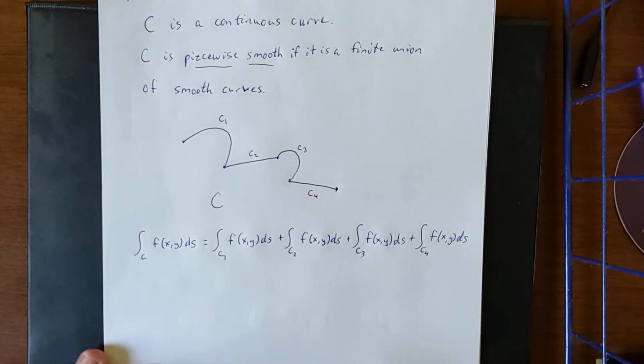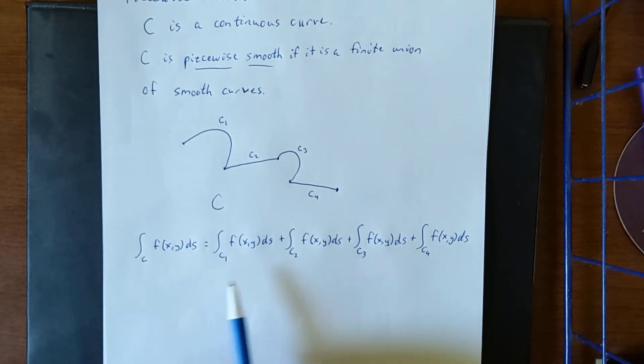So even if they all use different parameterizations, that's totally fine. We just give them each their own parameterizations and then add all of the results together.